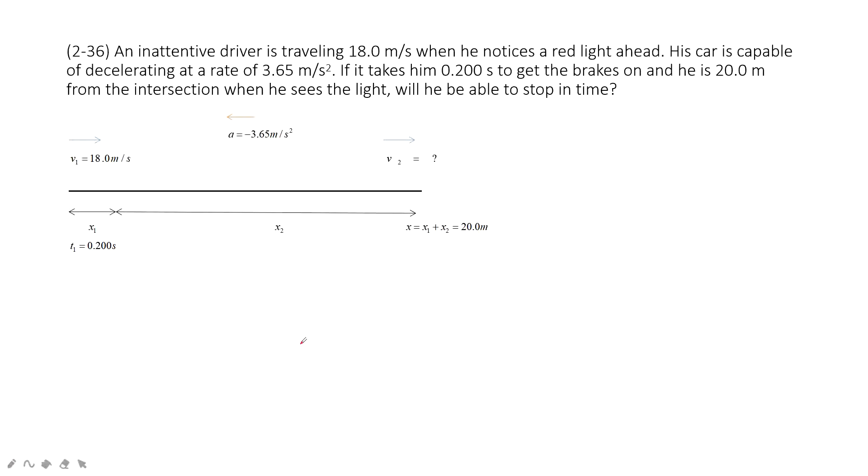In this one, let's find some keywords. An inattentive driver is traveling 18 meters per second when he notices there is a red light ahead. His car is capable of deceleration at an acceleration of 3.65 meters per second squared.